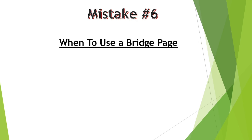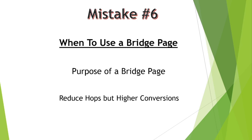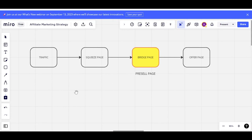Mistake number 6: when to use a bridge page. What is the purpose of a bridge page, and does reducing the hops mean you get higher conversions? This is how a typical funnel looks: you have traffic moving into your squeeze page, and usually after the squeeze page we channel them straight to the sales offer page. The bridge page exists between your squeeze page and your sales offer page as a pre-sell page. It does not depend simply on whether the offer is high ticket or low ticket — it does not work that way.